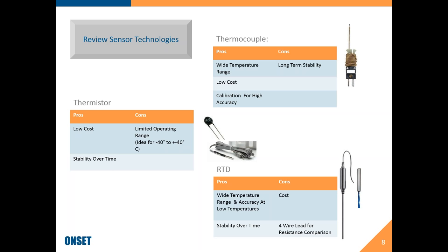The last technology is probably the best when it comes to range, accuracy, and stability, but it comes with a big con: cost. RTDs are typically used for test equipment. They have great stability over time but come at a higher cost, and because they often require a higher number of wire leads or resistance comparison, they require a specific type of data logger or back-end computer to run them.